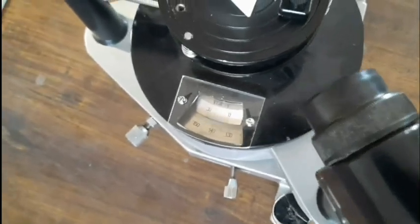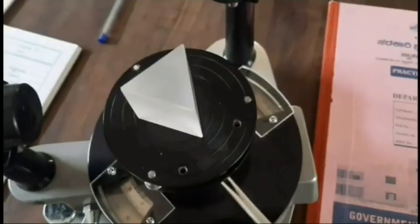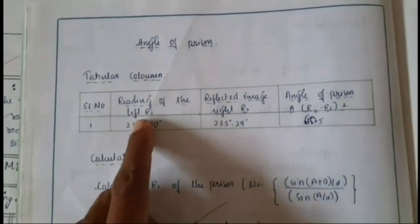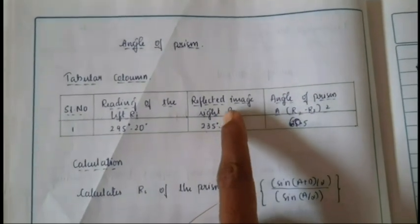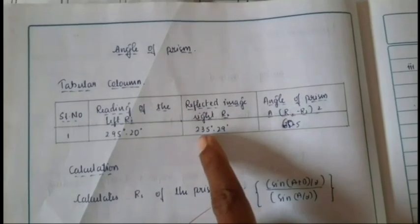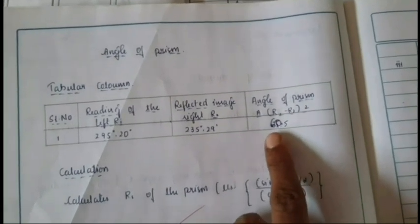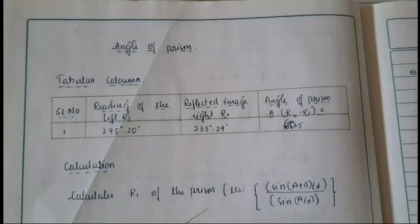Calculate the angle of minimum deviation using the values R1 and R2. We can calculate the angle of prism here. The reading of the left is 95 degrees and the reflected image R2. If we subtract these two and divide by 2, we will get the angle of prism — it is around 60 degrees.